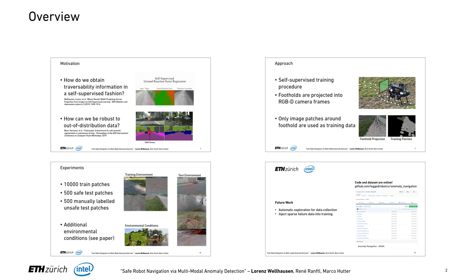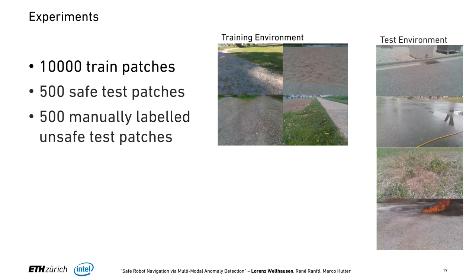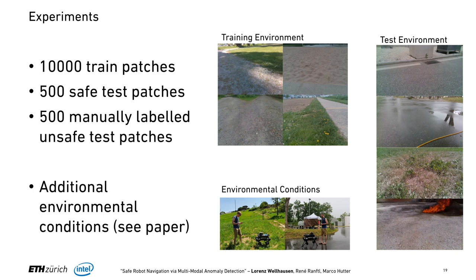Experimentally, we created training data in various environments containing sand, grass, asphalt, gravel, and similar terrain. From that we extracted 10,000 terrain patches in a self-supervised fashion, then went to a completely distinct environment to collect test data: 500 safe test patches in a self-supervised fashion and 500 manually labeled unsafe terrain patches to compute a performance measure. We also collected data in a variety of environmental conditions — check the paper for those results. The short version is that more data from different conditions strictly improves performance.